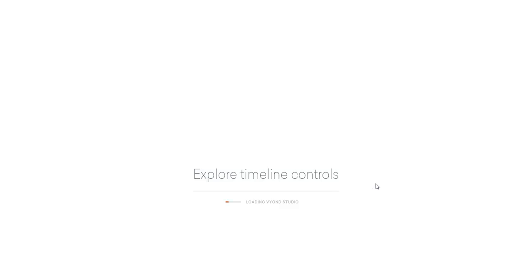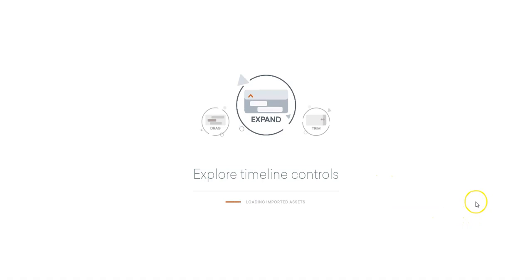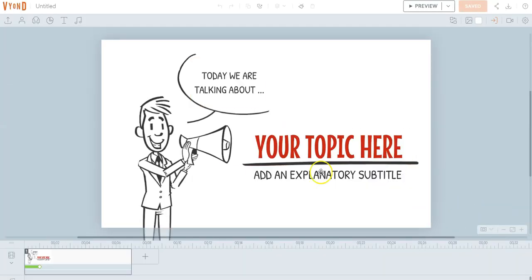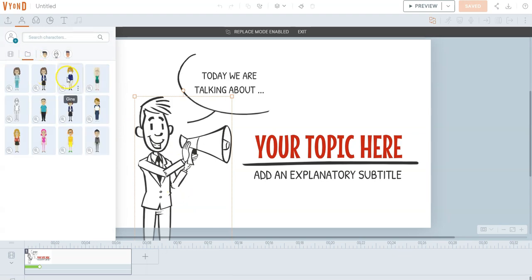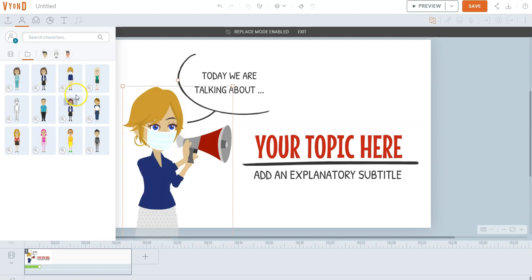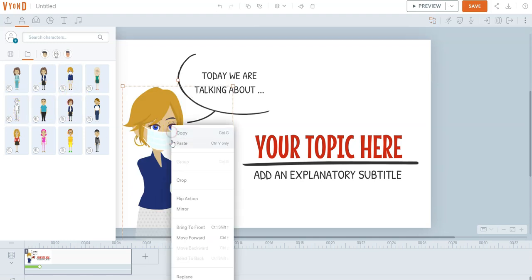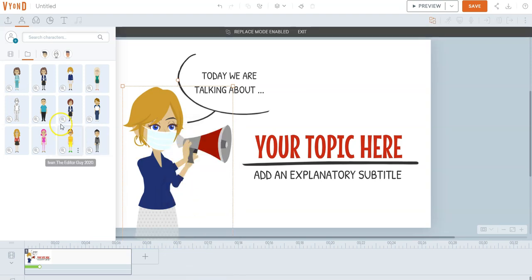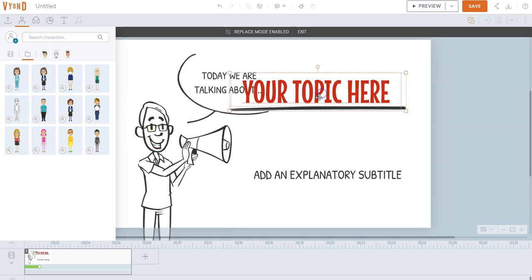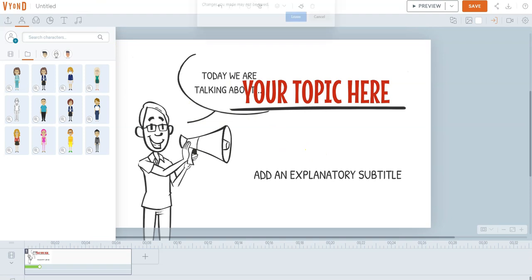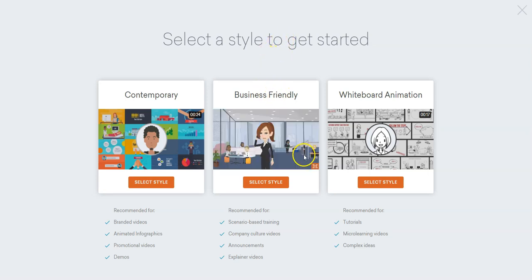You can do tutorials, micro-learning videos, and create complex ideas to share with other people. We go in here and click to start. We can go back in and change these characters — I'll go ahead and replace this one guy with somebody I've already created. Here's my library — let's put Gina in here instead. Each character is interchangeable within each program scenario.